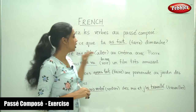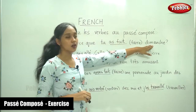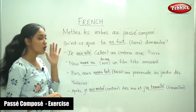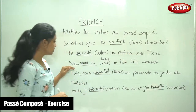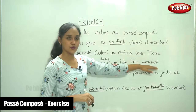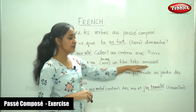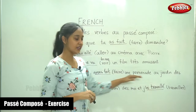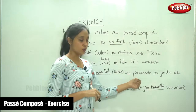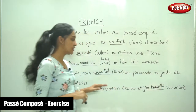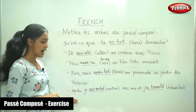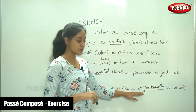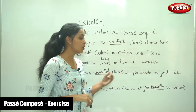Qu'est-ce que tu as fait dimanche? — What did you do on Sunday? Je suis allé au cinéma avec Pierre — I went to the cinema with Pierre. Nous avons vu un film très amusant — We watched a very nice film. Puis, nous avons fait une promenade au jardin des Tuileries — Then we took a walk in the garden of the Tuileries. Après, je suis rentré chez moi et j'ai travaillé — Later, I returned home and I worked.